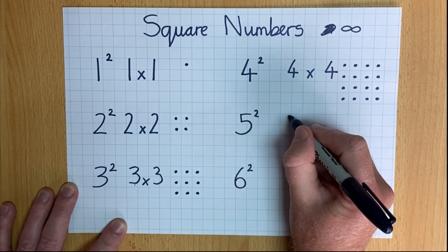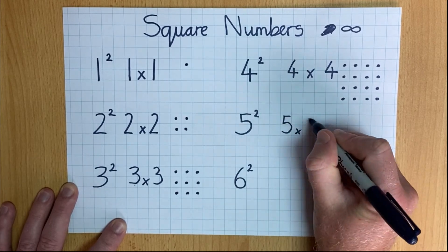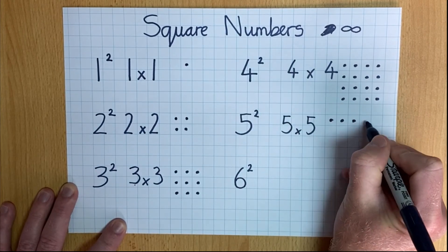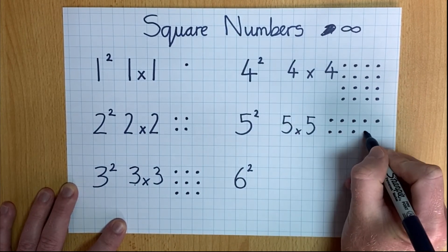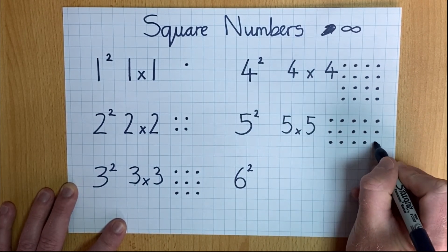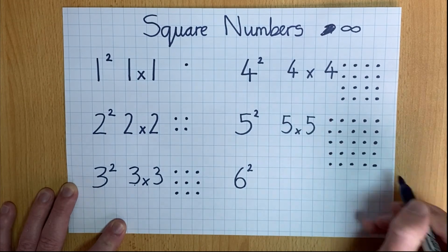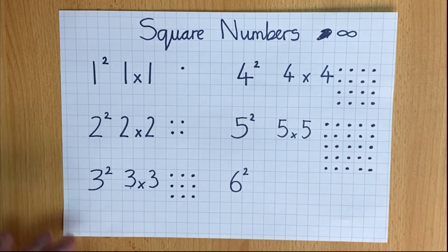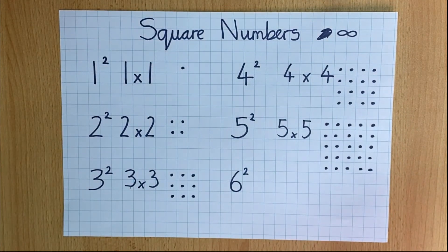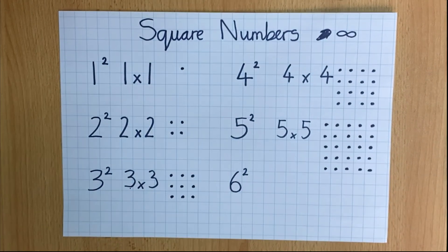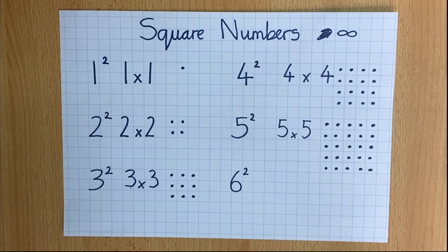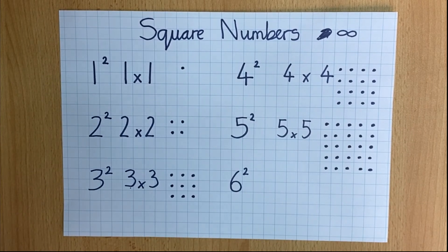Let's do five squared. And that is why we call squared numbers, square numbers.